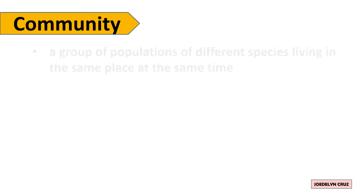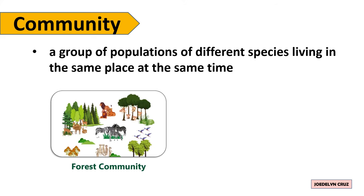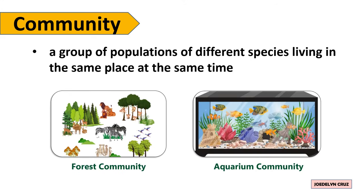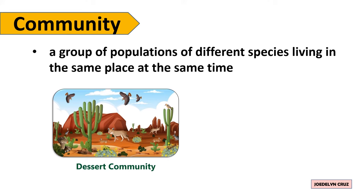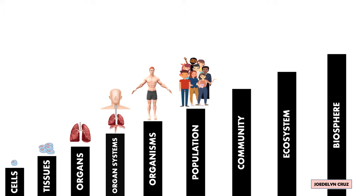Community is a group of populations of different species living in the same place at the same time. The examples of communities are Forest community, Aquarium community, Desert community, and Tundra community. So, the higher level next to population is Community.